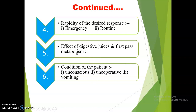First pass effect or first pass metabolism is also important to consider when selecting the route. First pass effect means that generally, before reaching the systemic circulation, drugs visit the liver and get metabolized by the microsomal enzymes present there. This reduces their bioavailability. Drugs that undergo high first pass metabolism have low bioavailability and a shorter duration of action. For example, testosterone undergoes the first pass effect and generally gets degraded, so this drug is generally given by the parenteral route.